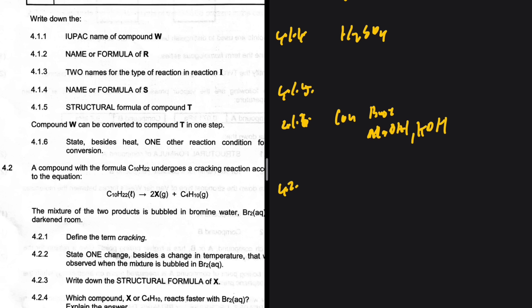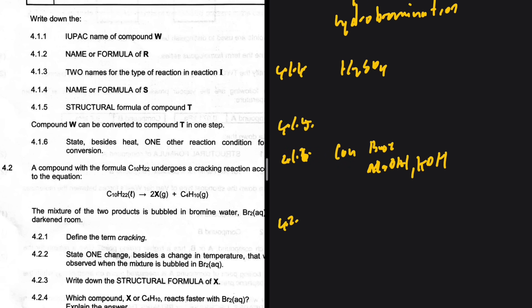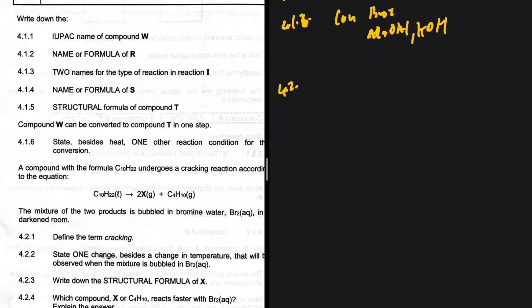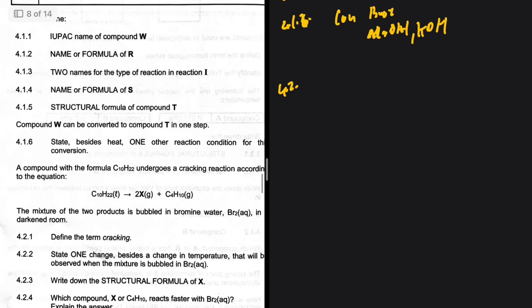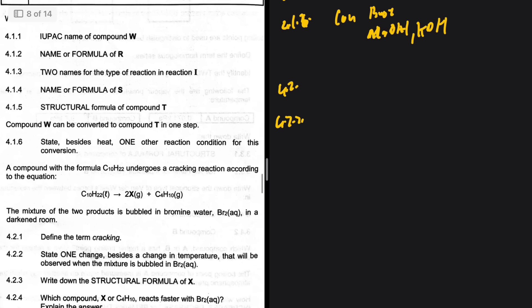And then 4.2, a compound with this formula C10H22 undergoes a cracking reaction according to the equation. The mixture of the two compounds is bubbled in bromine water in a darkened room. Define the term cracking, I'll let you do that. 4.2.2, state one change besides the change in temperature that will be observed when the mixture is bubbled in Br2.